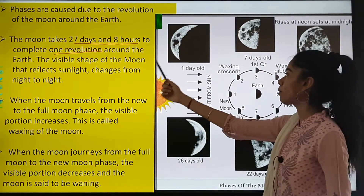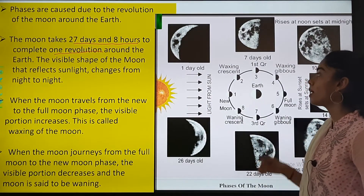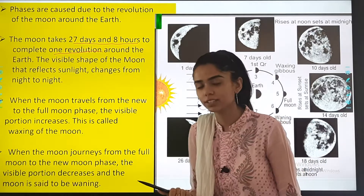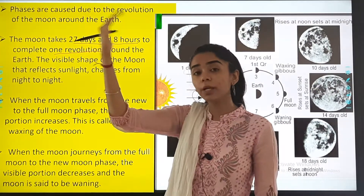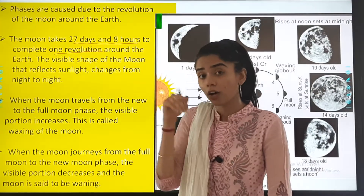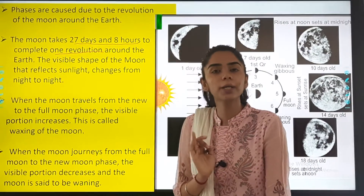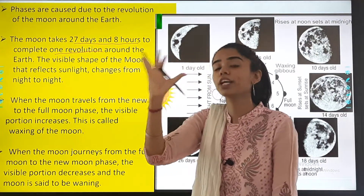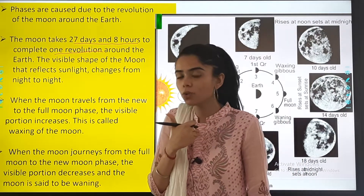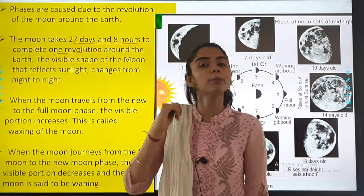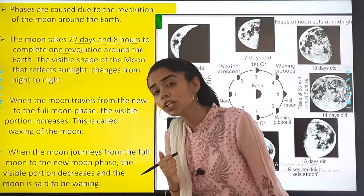The visible shape of the moon that reflects sunlight changes from night to night. The shape which is visible to us changes because of the reflection of sunlight — the moon has no light of its own and is visible only because of the sun.